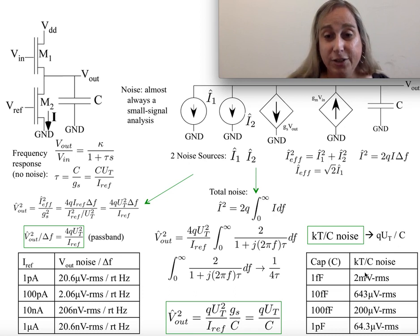You can think about q·uₜ over C as usually an easier way for me to calculate it personally. It's useful to see what those numbers look like as a function of capacitance. This is the total noise over the entire bandwidth and notice is independent of the current, because if you think about it, if I have a higher current, I get a higher bandwidth but I get more noise.